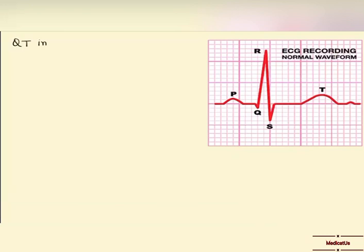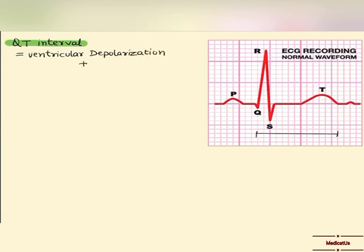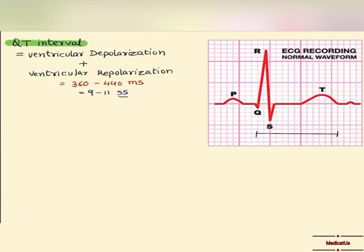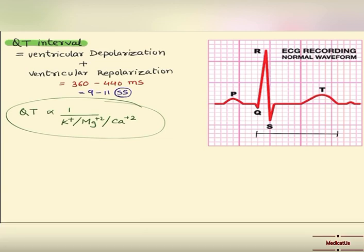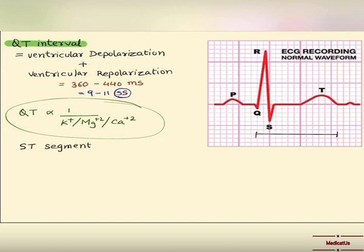The QT interval is from the start of Q to the end of T. It represents ventricular depolarization plus ventricular repolarization and is between 360 to 440 milliseconds, that is 9 to 11 small squares. In electrolyte imbalance, QT will be affected since it is inversely proportional to electrolytes — for example, hypokalemia causes QT prolongation, while hyperkalemia causes a short QT.